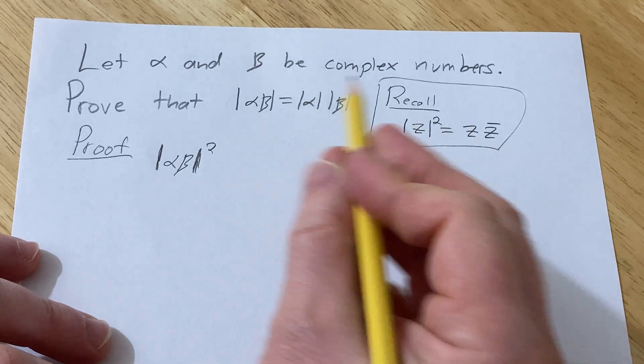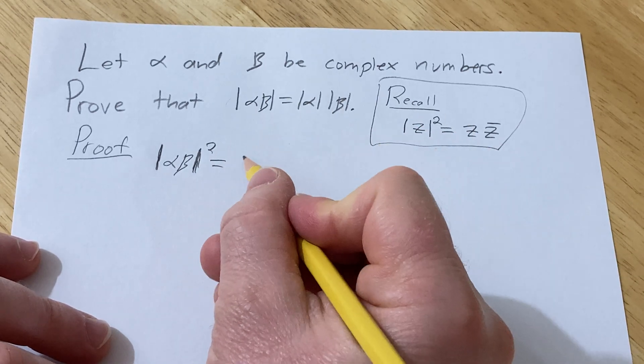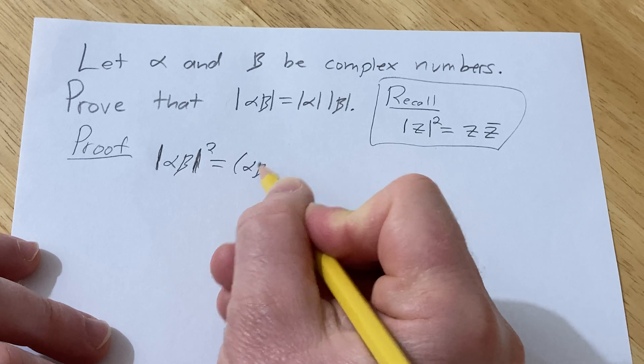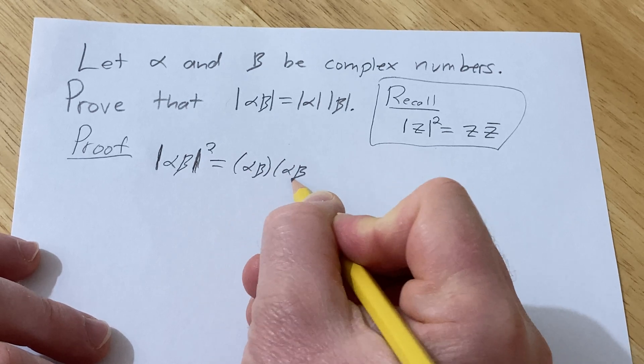So using this super powerful formula, this is equal to alpha beta times the conjugate of alpha beta.